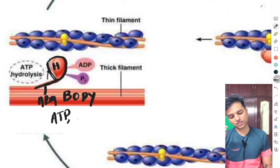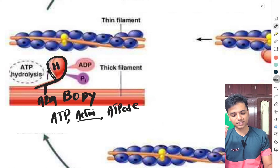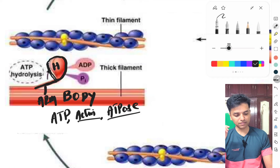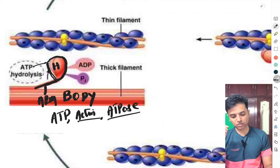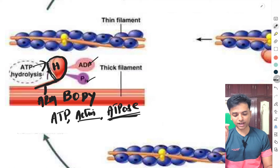A third important property of the myosin head is that it also has intrinsic ATPase activity. In the relaxed state, ATP comes and binds to the head of the myosin. Due to the intrinsic ATPase activity, the ATP is immediately hydrolyzed into ADP and a high-energy phosphate. However, the ADP and high-energy phosphate remain attached to the head — this is called incomplete hydrolysis.